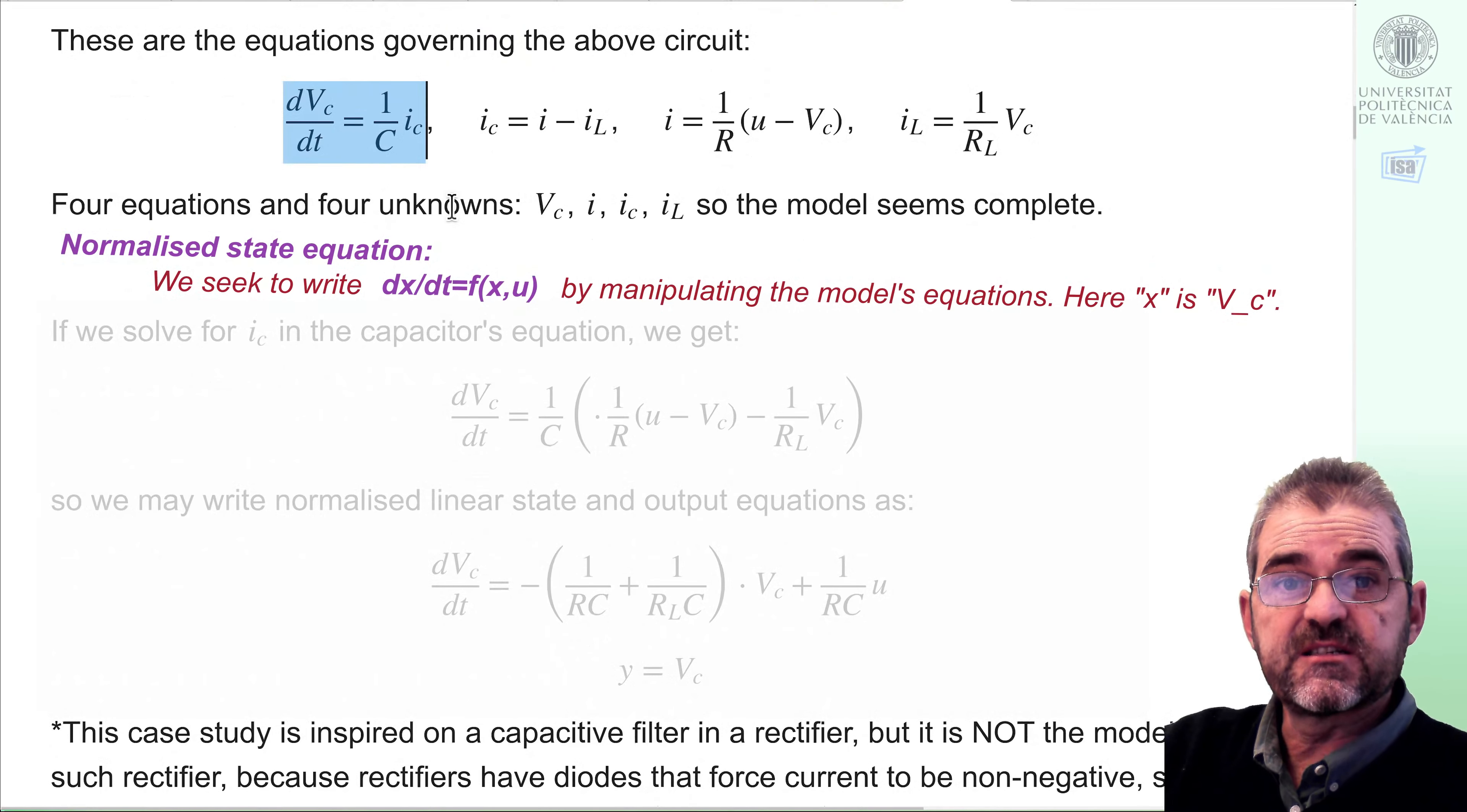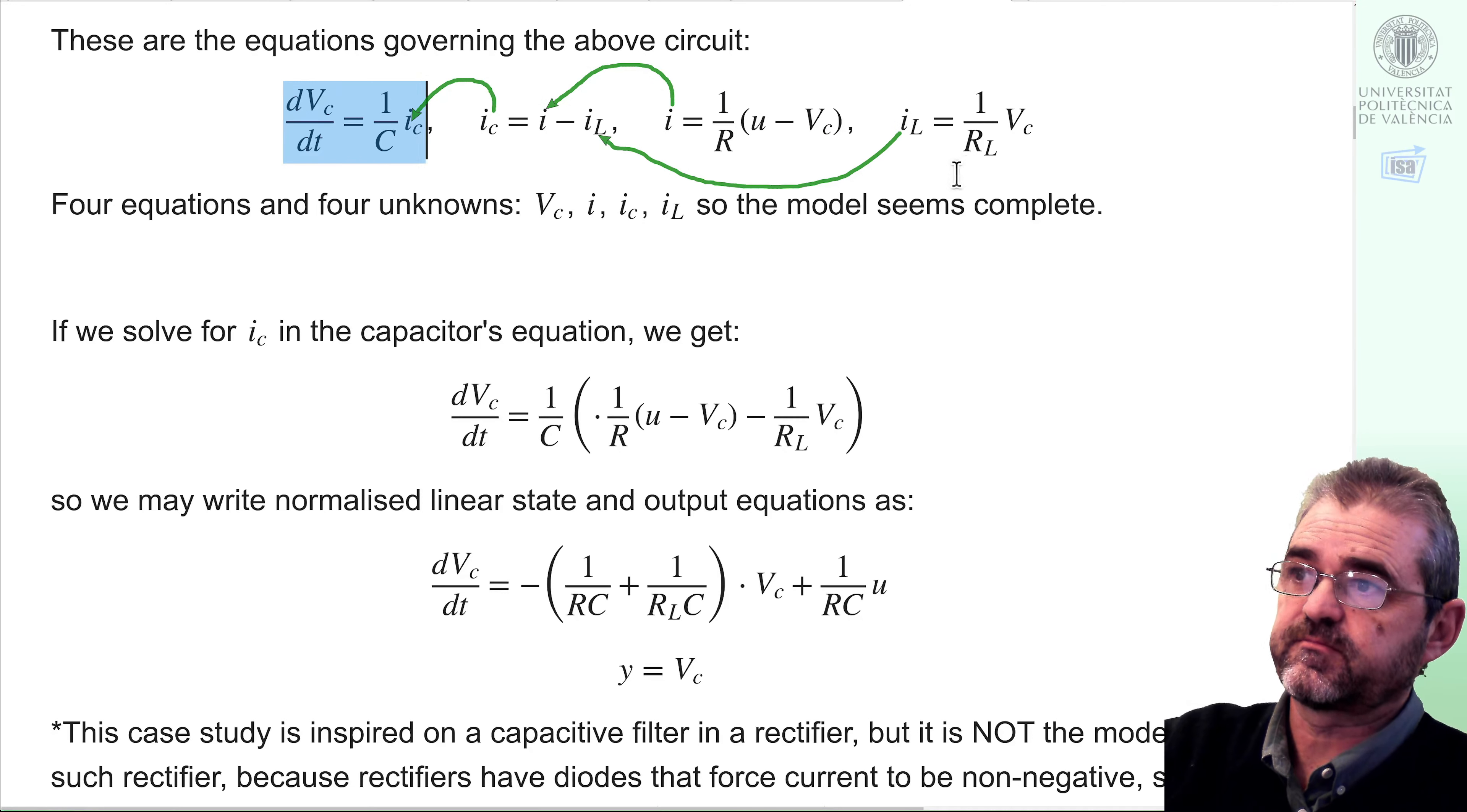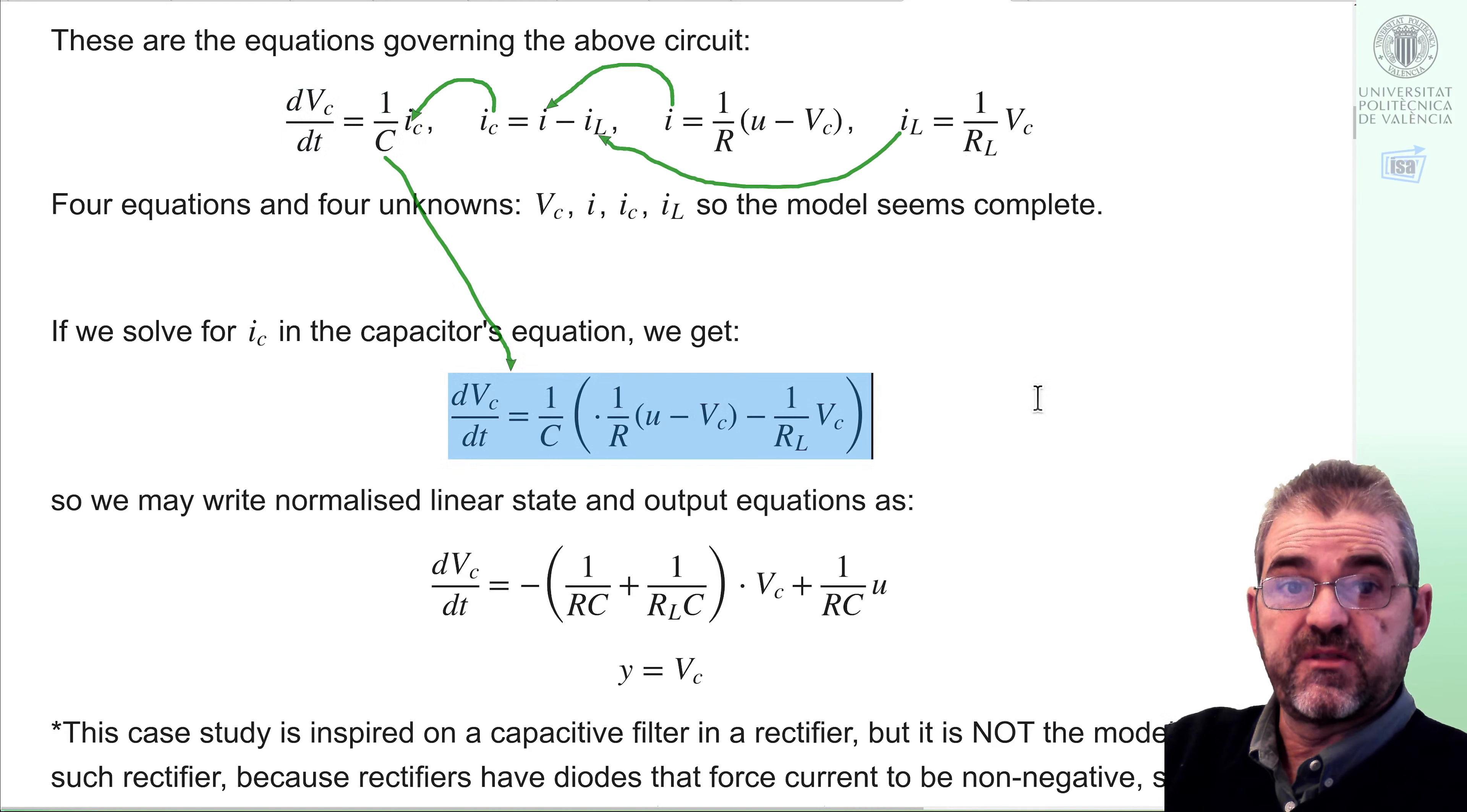This will be the core of the dynamics, the state equation. And I must replace the symbols at the right hand side of the equal sign with something that only depends on the state, capacitor voltage, because it has a derivative in these physics equations. So the right hand side must be replaced by something that depends only on state and input. And in this case, it's somehow easy to replace this equation in there and then replace current from the input source by this equation and leakage current by the last equation.